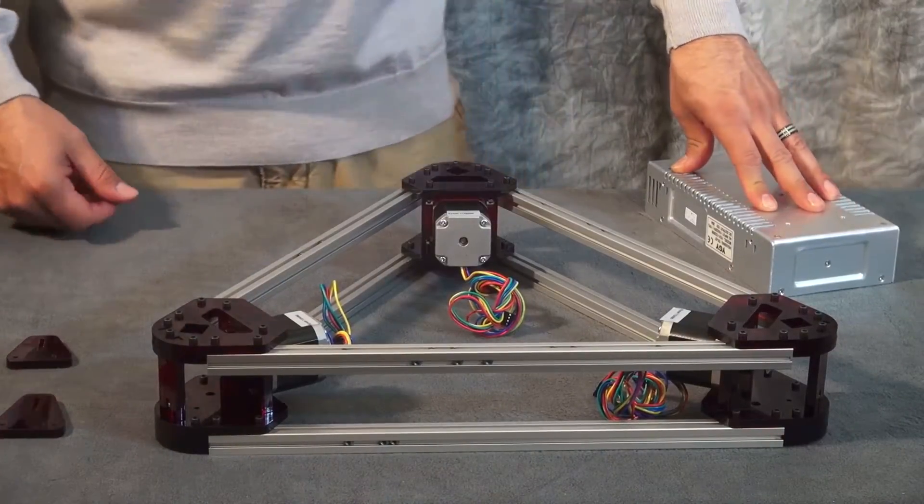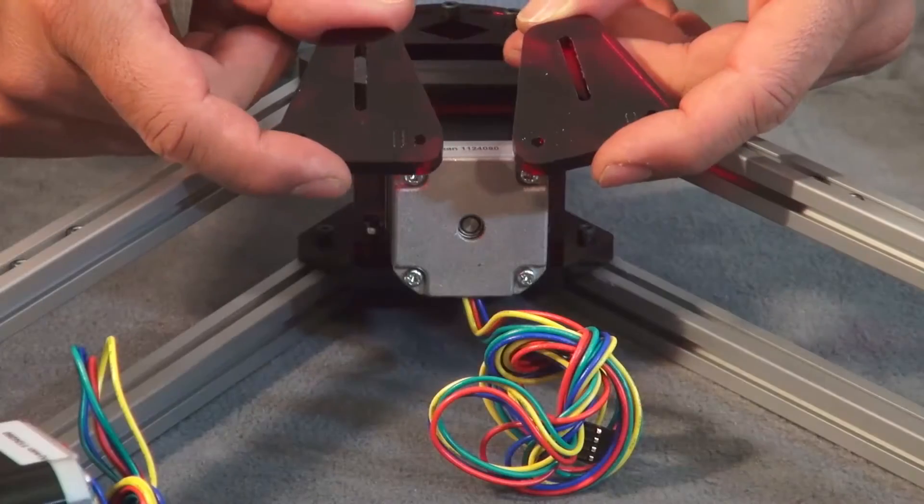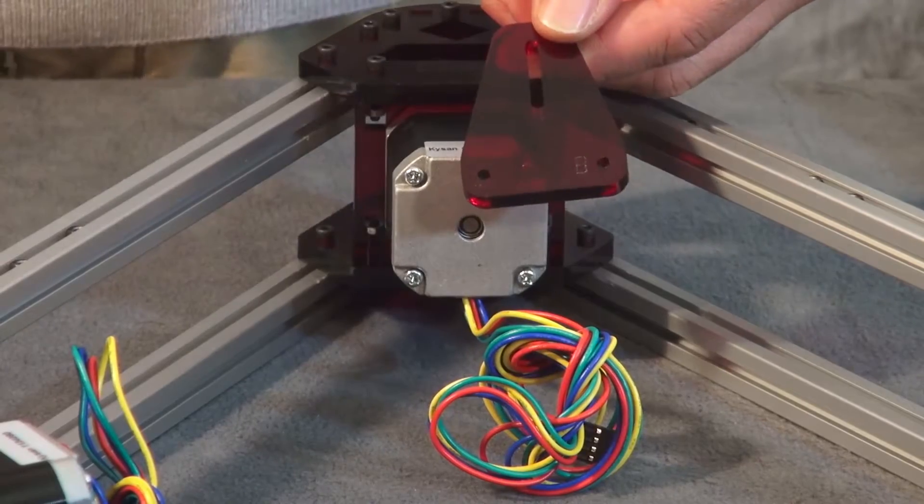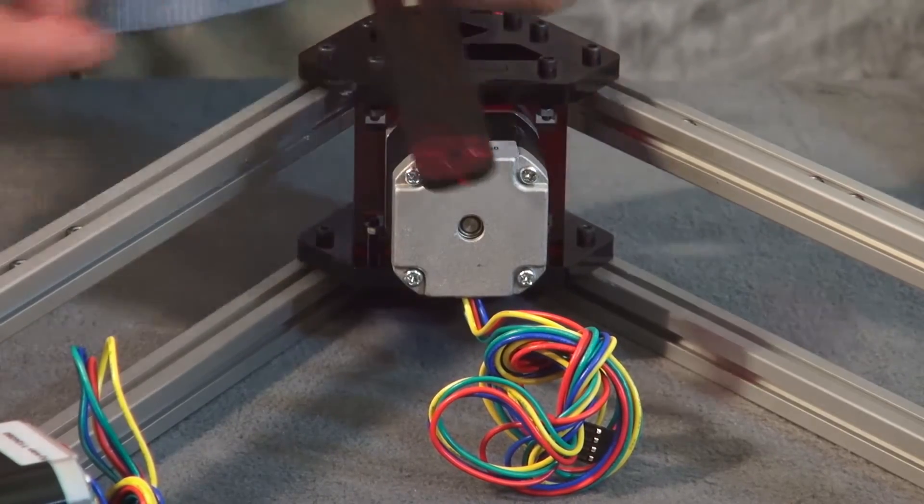And now for the power supply assembly, you're going to need acrylic parts A, B and C.